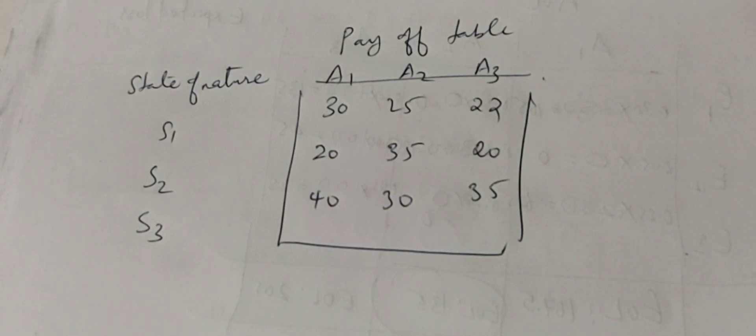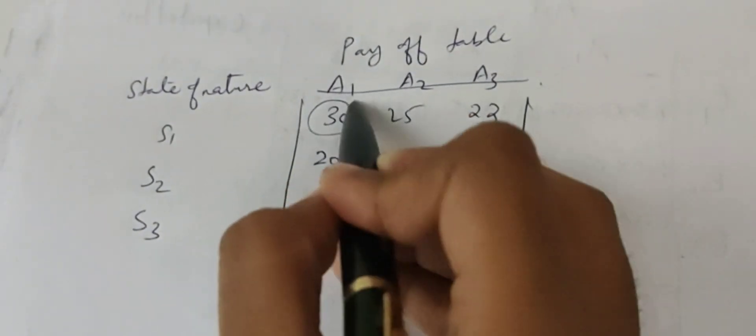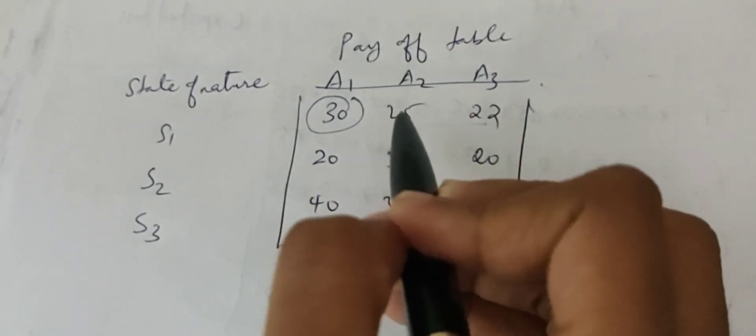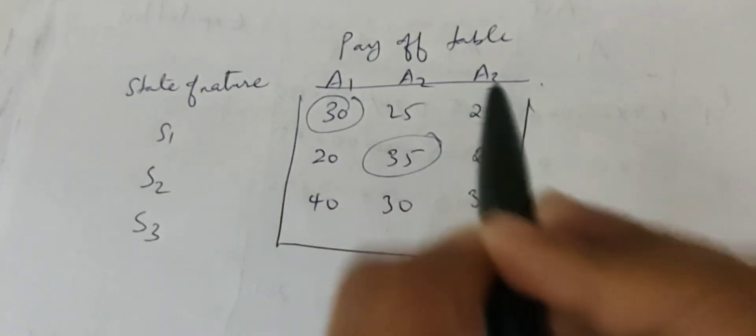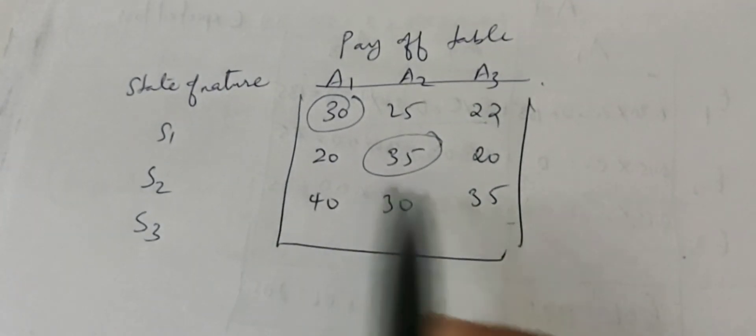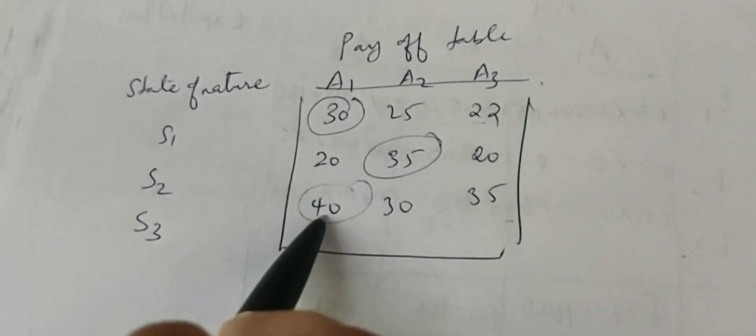Looking at the EMV values: the second row's highest value is 35, and the third row's highest value is 40.